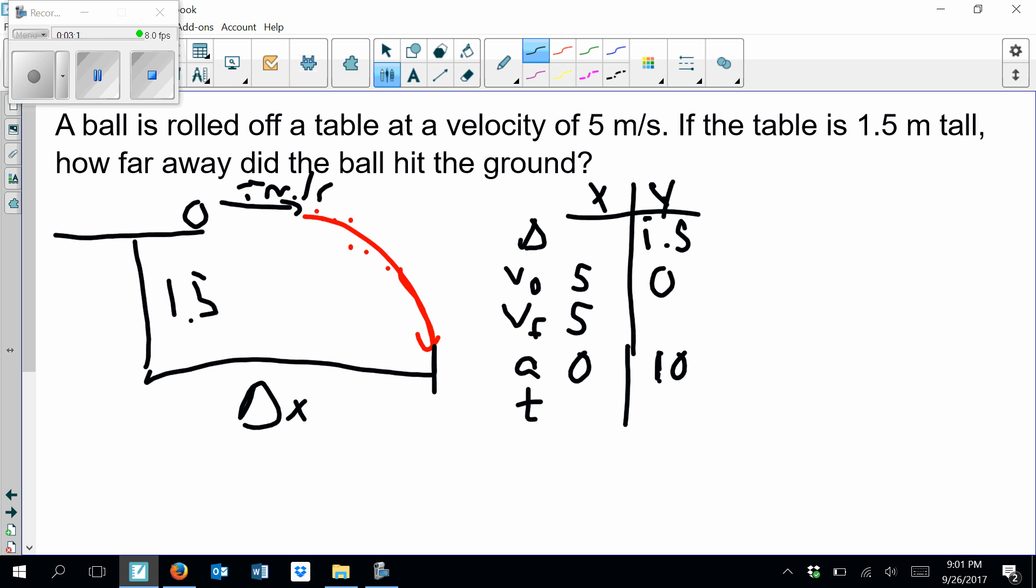So now I want to set up an equation. The value that I'm looking for is Δx. So I'm going to set up Δx = v₀t. That's the only equation I have in the x direction. So if I start filling in numbers, Δx is what I'm looking for. My initial velocity is 5. But I don't know what my t is. I don't know how long it takes. So I'm going to actually switch over to the y direction to solve for time.